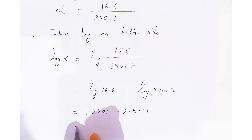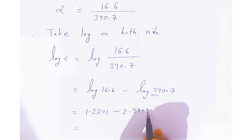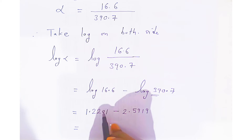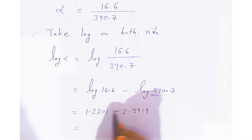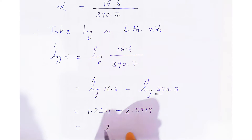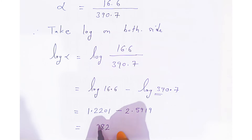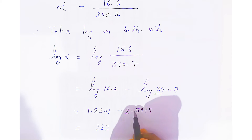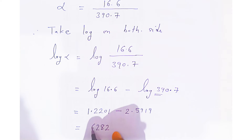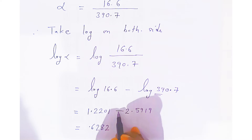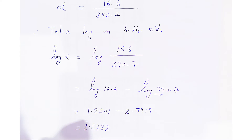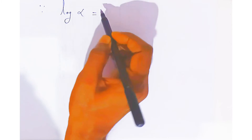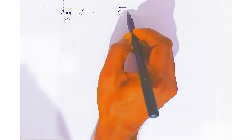When you subtract: 1 minus 9 is not possible, so you take 1 from the next place — it becomes 11 minus 9, which is 2. Then 9 minus 1 is 8. Next, 11 minus 9 again gives 2. Then 11 minus 5 gives 6. The characteristic is already negative 2, written as 2-bar. So this is the value of log alpha: you get 2-bar 0.6282.